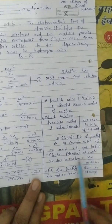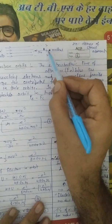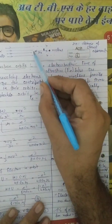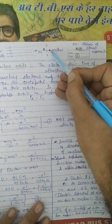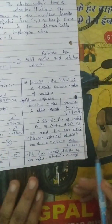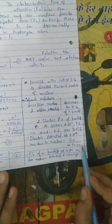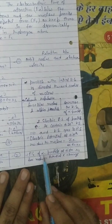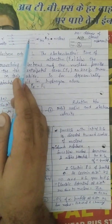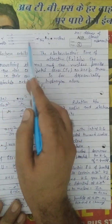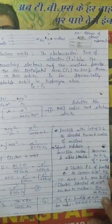The electric potential at a distance r₀ due to the nucleus — due to the nucleus, how much potential acts on the alpha particle — is equal to the charge on the nucleus divided by 4πε₀ times r₀. The potential energy of the alpha particle is the potential of the nucleus multiplied by the charge of the alpha particle.